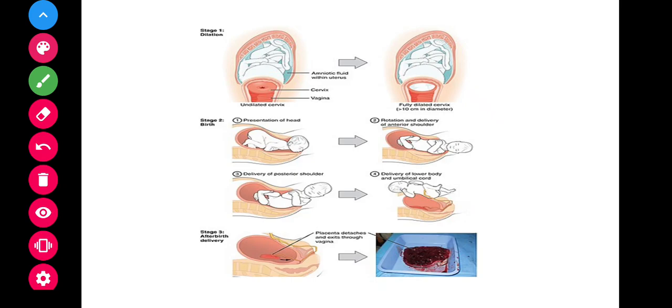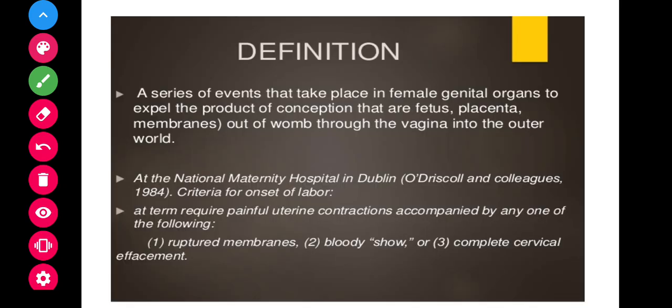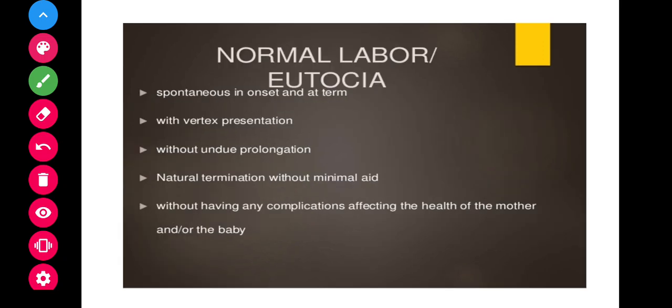There are four stages in labor, which we will discuss later. Before that, let's discuss the physiology of labor. Normal labor should be spontaneous and at term — meaning delivery should happen around 38 weeks, after nine months. If it occurs before term, it is called preterm; if beyond term, it is called post-term. Only at-term labor is considered normal labor.